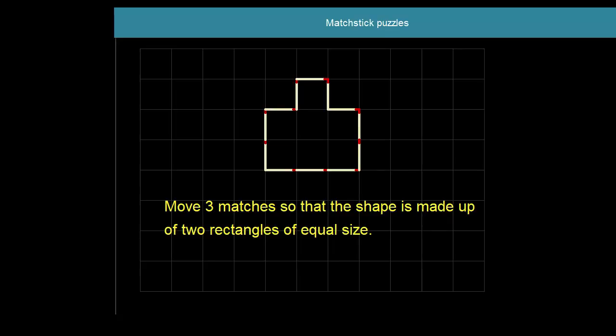For this shape, we need to move three of those matches so that the shape that we end up with looks like it's made up of two rectangles of equal size. Three matches. Three matches to end up with two equal sized rectangles.